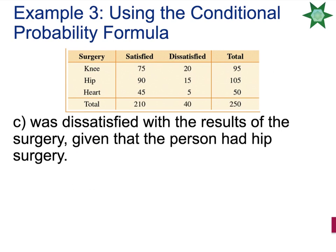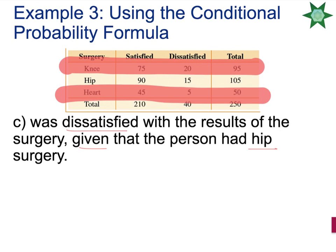What is the probability that one randomly selected person was dissatisfied given that they had hip surgery? In this situation, we eliminate the knee patients and the heart patients and focus solely on the hip patients. In the hip group there were 105 people who had hip surgery. Of those, how many were dissatisfied? 15 out of 105 were dissatisfied. Simplify the fraction and the probability is 1 out of 7 hip surgery patients were dissatisfied.